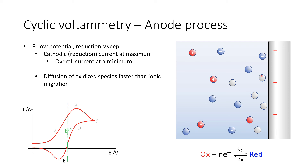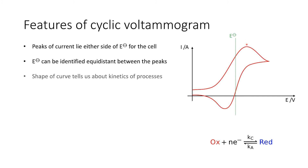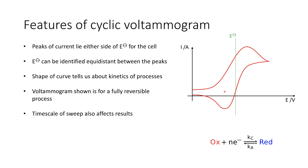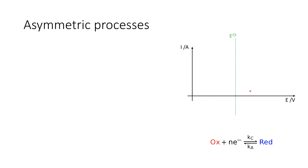The peaks of the current lie either side of the standard electrode potential for the cell, allowing us to work out the standard electrode potential for a particular species — identified as the point equidistant between the reduction peak and the oxidation peak. We can also tell something about the kinetics of the process by analysing the shape of the curve. For a fully reversible process we see oxidation as we ramp the potential up and reduction as we ramp it back down. The timescale of the sweep also affects results — if we sweep too quickly we might miss the subtleties of reaction processes, diffusion, or migration kinetics.